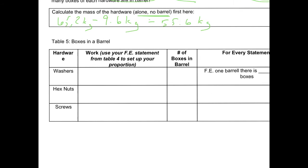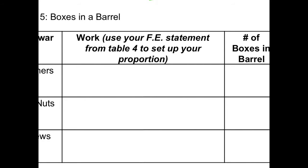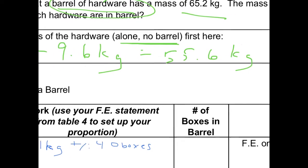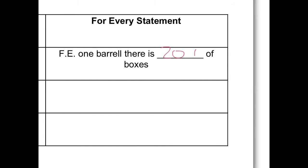Coming back to boxes in a barrel: 1,000 grams is the same as 1 kilogram, so for every 1 kilogram there are 40 boxes. I don't want it for 1 kilogram — I want it for 55.6 kilograms. To get from 1 to 55.6 I multiply by 55.6, and for every 55.6 kg that comes out to about 2,000 boxes. You can use a calculator to get the exact figure.